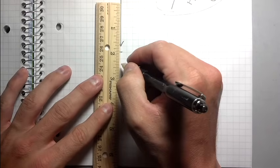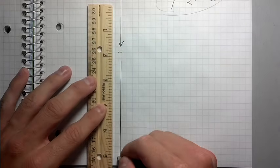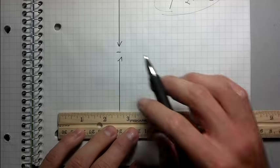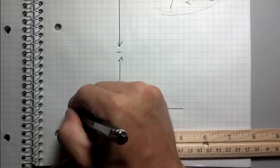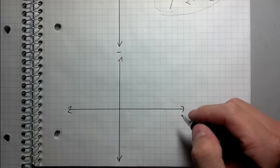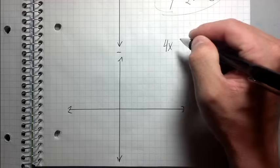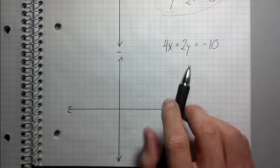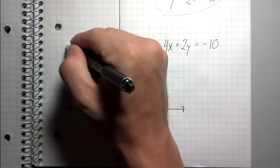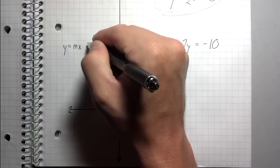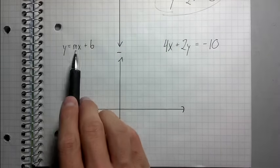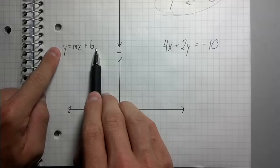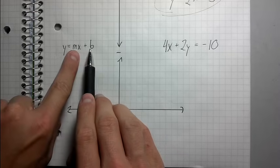I'm going to draw another coordinate system — another graph — so I can make this clear. Here's our x-axis and our y-axis. Suppose they gave us an equation that looked like this: 4x plus 2y equals negative 10. The first thing wrong with this equation is that it needs to be in slope-intercept form — y equals mx plus b. You have to memorize this, because this is the only form that makes it easy to graph the line: you can clearly see what the slope is and what the y-intercept is going to be.